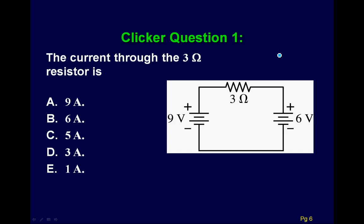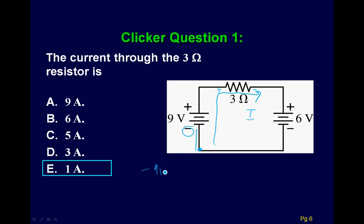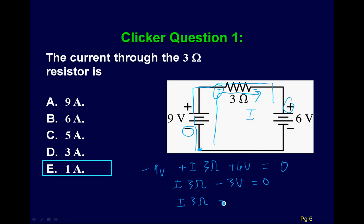Here's an example with multiple batteries. Assuming clockwise current, the positive end of the resistor is on the left. Going around the loop: first sign is negative 9 volts, then positive I times 3 ohms, then positive 6 volts, all equal to zero. Adding the voltages gives I times 3 ohms minus 3 volts equals zero, so 3 volts on the other side gives I equals 1 amp.